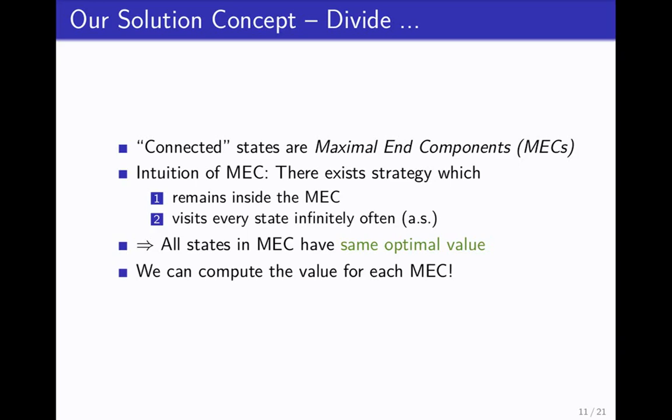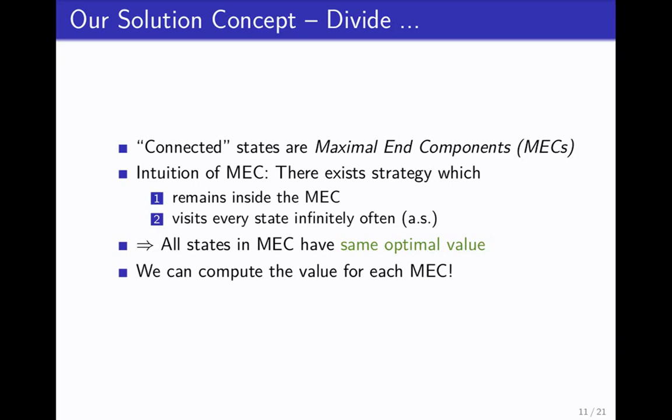Now we know we can actually compute values for each MEC. This isn't the whole solution, but half of it. What's only missing now is, how can we go from we have values for each MEC to what's the global value? We came up with a simple solution. We first approximate the value in each MEC or determine the value of each MEC. Then collapse all of these MECs into representative states. And then solve a weighted reachability problem, which I'm going to explain again with the example.